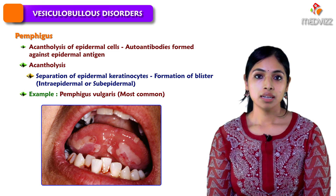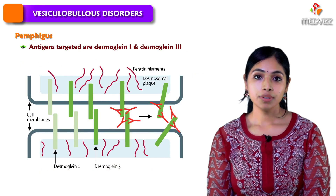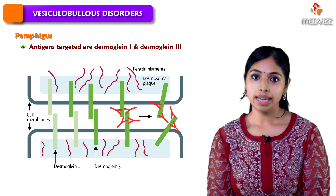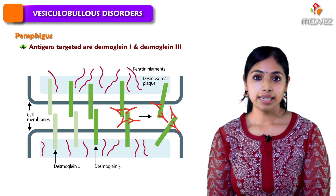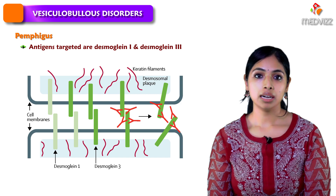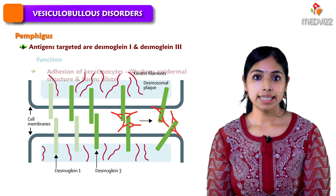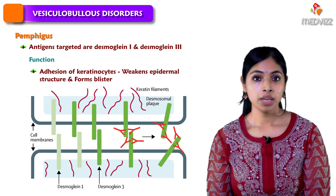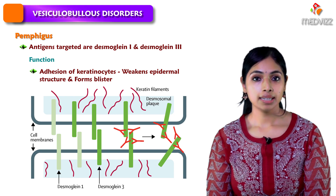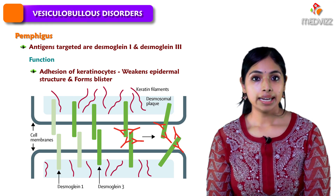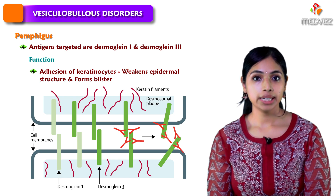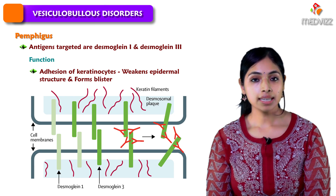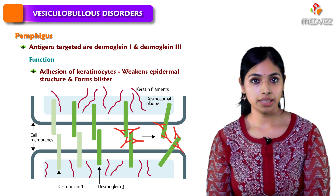In Pemphigus disorders, the antigens targeted by autoantibodies are Desmoglein 1 and Desmoglein 3. Desmoglein 1 and 3 mainly function in the adhesion of epidermal cells to each other. When Desmoglein 1 and 3 are targeted, these adhesions are broken down, leading to weakening of the epidermal structures and loss of adhesion between cells, forming a blister cavity.